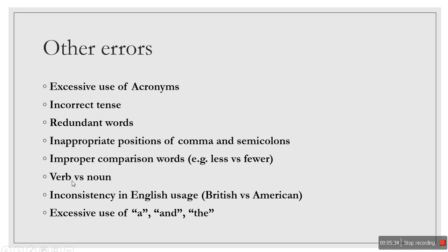Other miscellaneous errors include improper comparison words, for example 'less' versus 'few,' or 'lesser' versus 'fewer.' Similarly, confusing verb versus noun forms — for example, 'effect' versus 'affect.' Inconsistency in English usage is also another error: in the same paper, somewhere using British English and somewhere American English. It's better to use the same pattern throughout the paper, depending on the target journal.